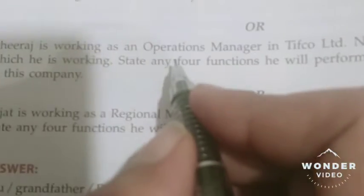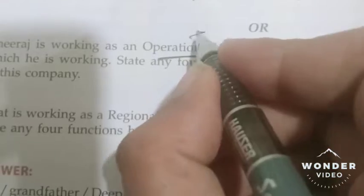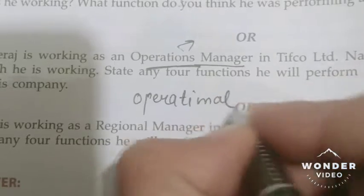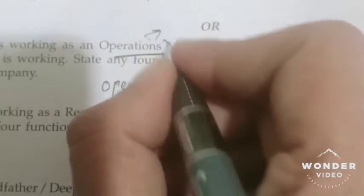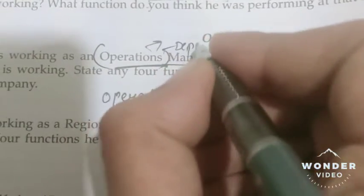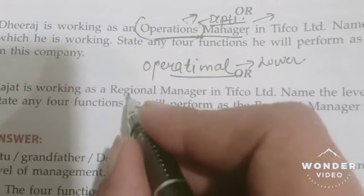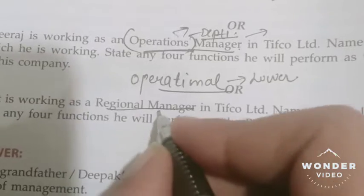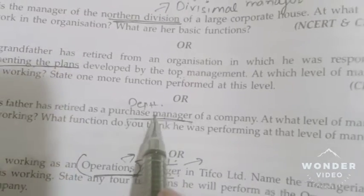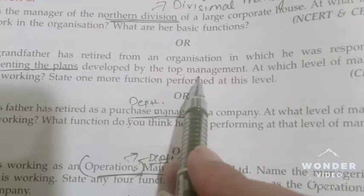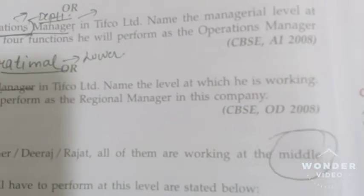Deraj is working as an Operation Manager. Note that 'operational' is another name for the lower level, but 'operation manager' refers to one department, so the operation manager is part of the middle level. Then, Deraj is working as a Regional Manager. Regional managers, operation managers, purchase managers, sales managers, finance managers — all responsible for implementing the plans developed by top management — are working at the middle level of management.